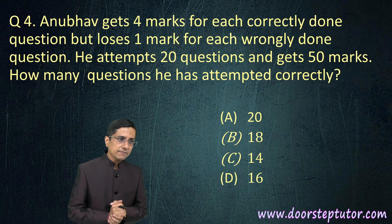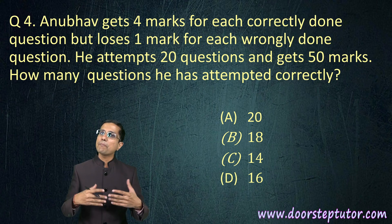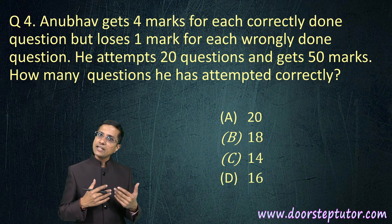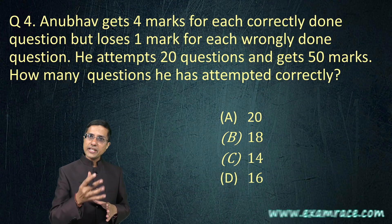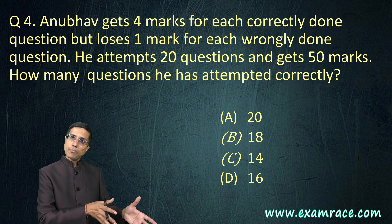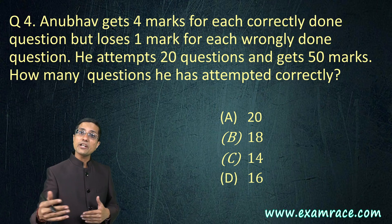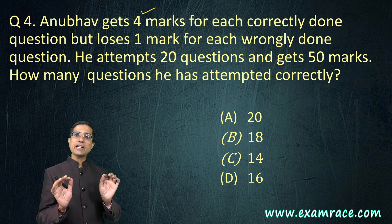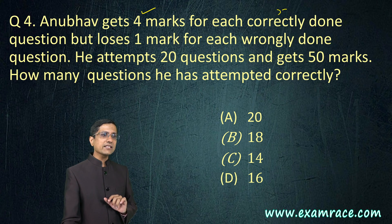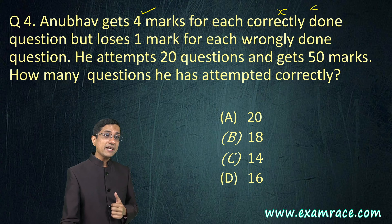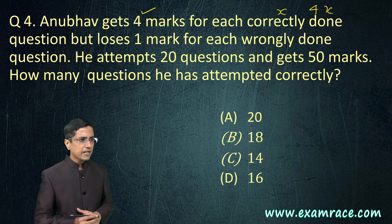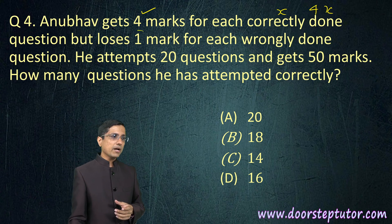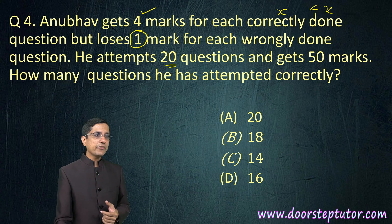Now, here is the fourth question. There is a guy called Anubhav and he was attempting your paper just like you would for your IMO. For each correctly done question - there is negative marking. In some exams, there is negative marking. For IMO, it is not. But for other exams, there is negative marking. If you do a question correctly, you get positive marks. If you do a question incorrectly, you get negative marks. The marks are deducted. 4 marks are awarded for each correctly done question. Let us say that he is able to do X number of questions correctly. He would get 4X marks for it. But he loses one mark for each wrongly done question. Total number of questions that he has attempted is 20.